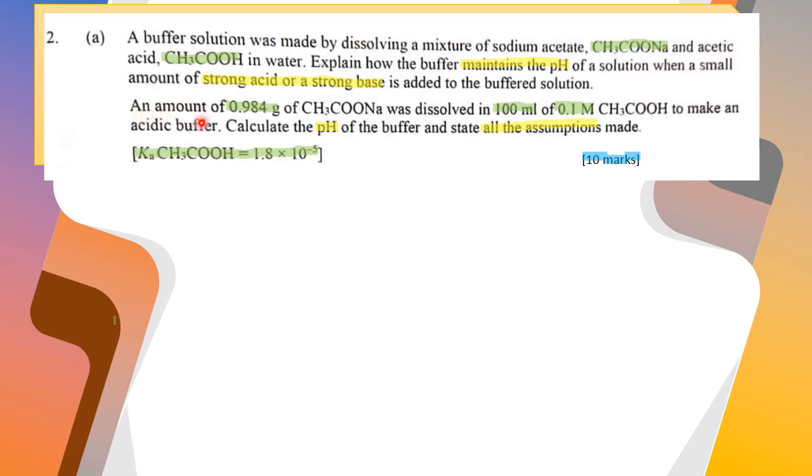Then, an amount of 0.94 grams of sodium acetate was dissolved in 100 ml of 0.1 molar acetic acid to make an acetic buffer. Calculate the pH of the buffer and state all the assumptions made. The value of Ka of acetic acid is given and the mark is 10.